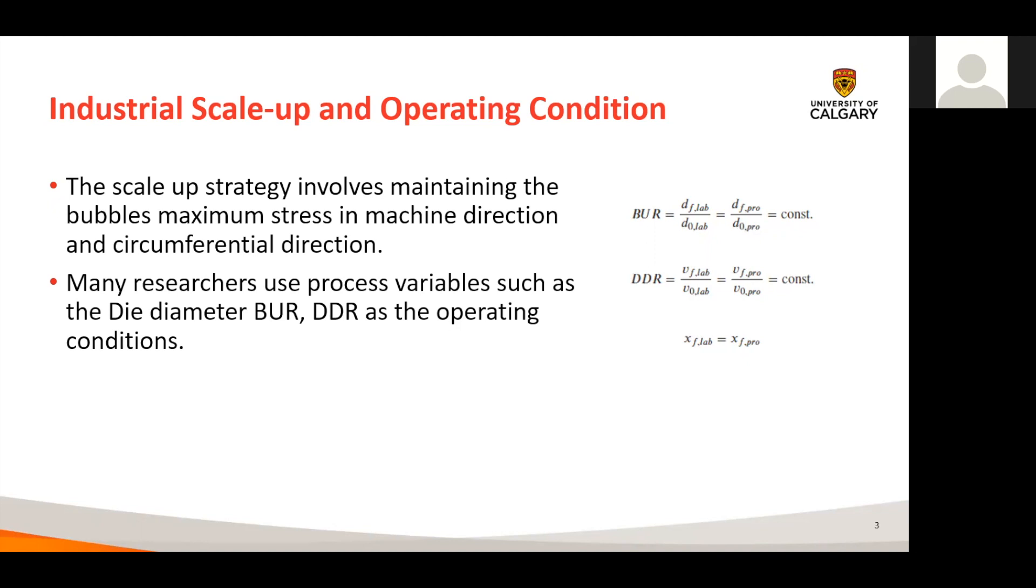In detail, the blow up ratio BUR, which is the ratio between the bubble diameter and the die diameter, the draw down ratio DDR, which is the ratio between the delivery rate of the melt and the film velocity at the frost line, and the frost line height must be the same in order to scale up.